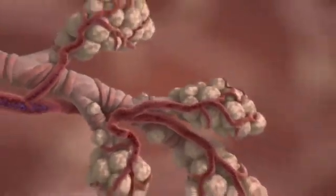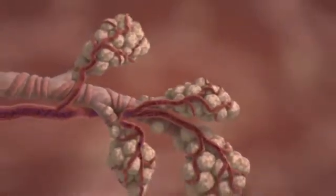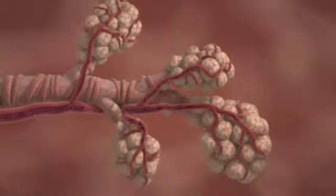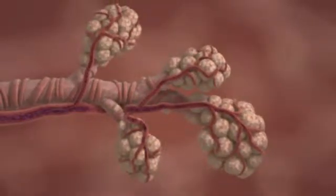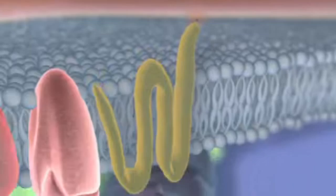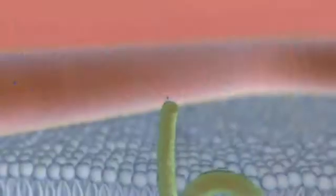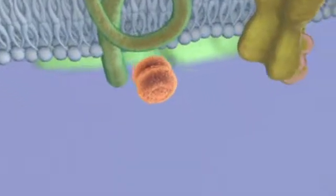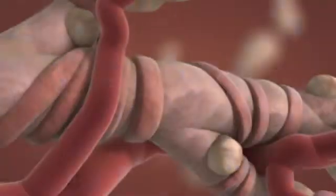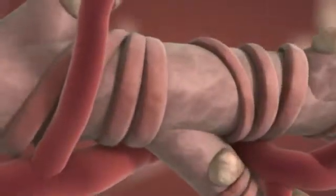In the lungs, the signaling molecule docks on muscle cells wrapped around bronchioles, but these cells relax instead of contract to allow more oxygen into the blood. Because the protein machinery inside each kind of muscle cell is different, this single type of signaling molecule can cause both relaxation and contraction.